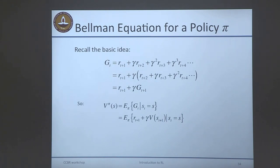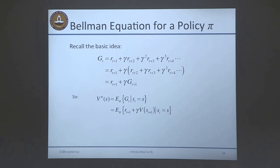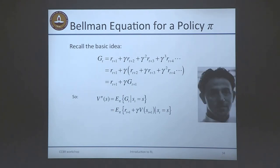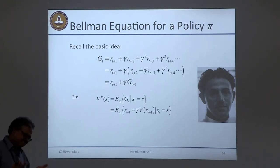Recall the basic idea of the Bellman equation. G_t can be written recursively as r_{t+1} + gamma*G_{t+1}. So I can write the Bellman equation: the value function is expressed in terms of the immediate reward and the discounted future value. The tricky part is evaluating the expectation, which requires knowing something about the system. The Markov assumption helps: the probability that the next state is s' and the next reward is r depends only on the immediate preceding state and action, not on earlier history.